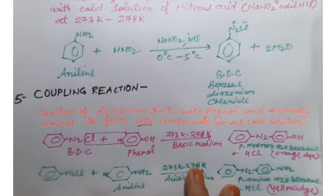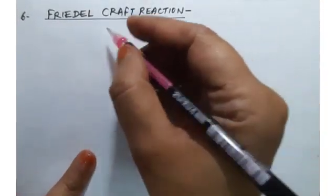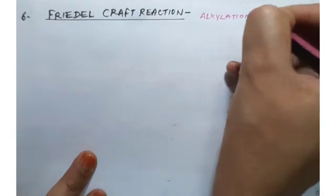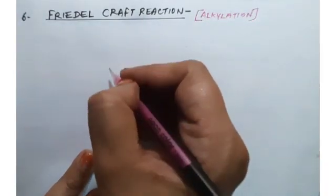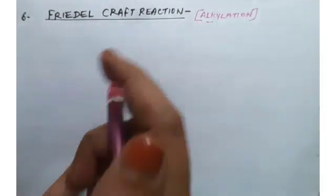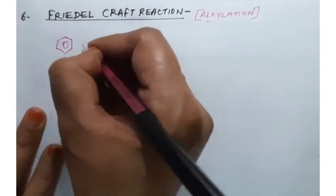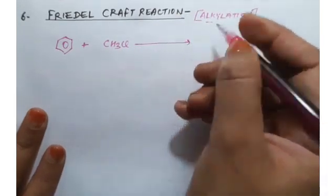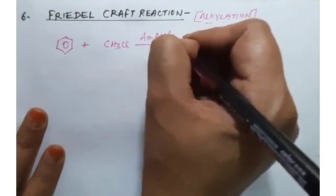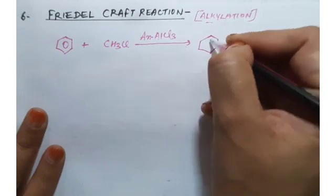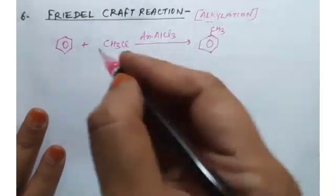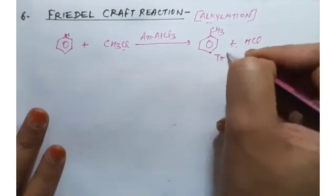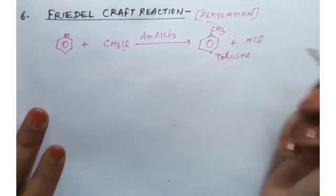Dye formation through coupling reaction. Next important reaction is Friedel-Crafts reaction — firstly, alkylation. When benzene and other aromatic compounds react with an alkyl halide, like benzene reacts with CH3Cl (methyl chloride) in presence of anhydrous AlCl3, it will form toluene (ring with CH3) and HCl is released.